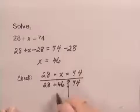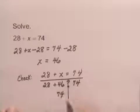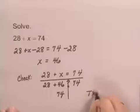Carrying out the addition, we get 74. And since 74 on the left side equals 74 on the right side, we have a true statement. And that means that the answer checks.